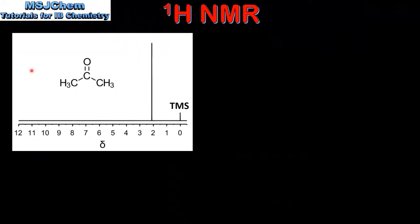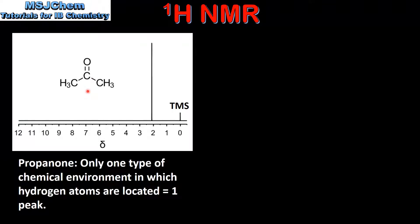Next we look at more examples of NMR spectra for different organic compounds. Our first example is the NMR spectrum for propanone. If we look at the structure of propanone we can see there are two CH3 groups bonded to a carbonyl group. The hydrogen atoms or protons in the two CH3 groups are in the same chemical environment. Therefore there is only one type of chemical environment in which hydrogen atoms are located and we see one peak on the NMR spectrum.